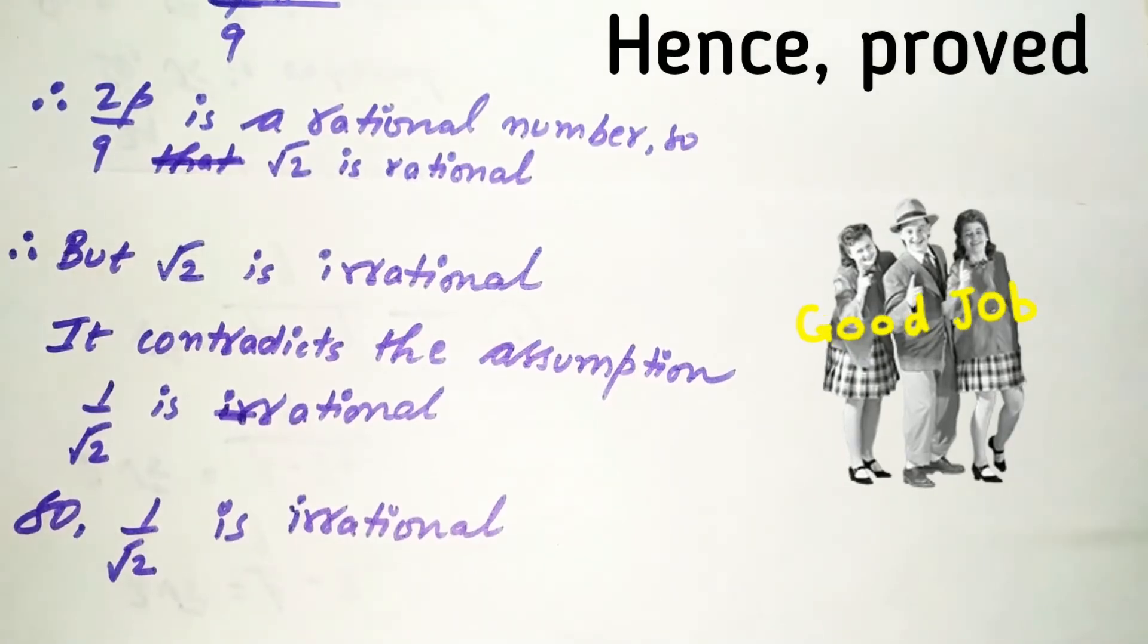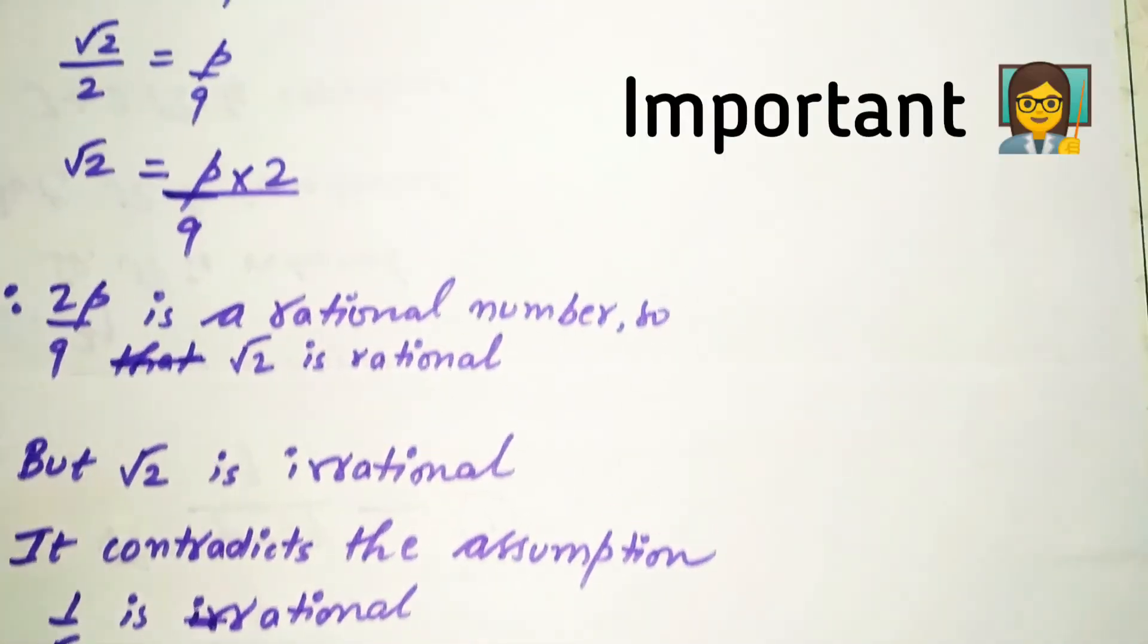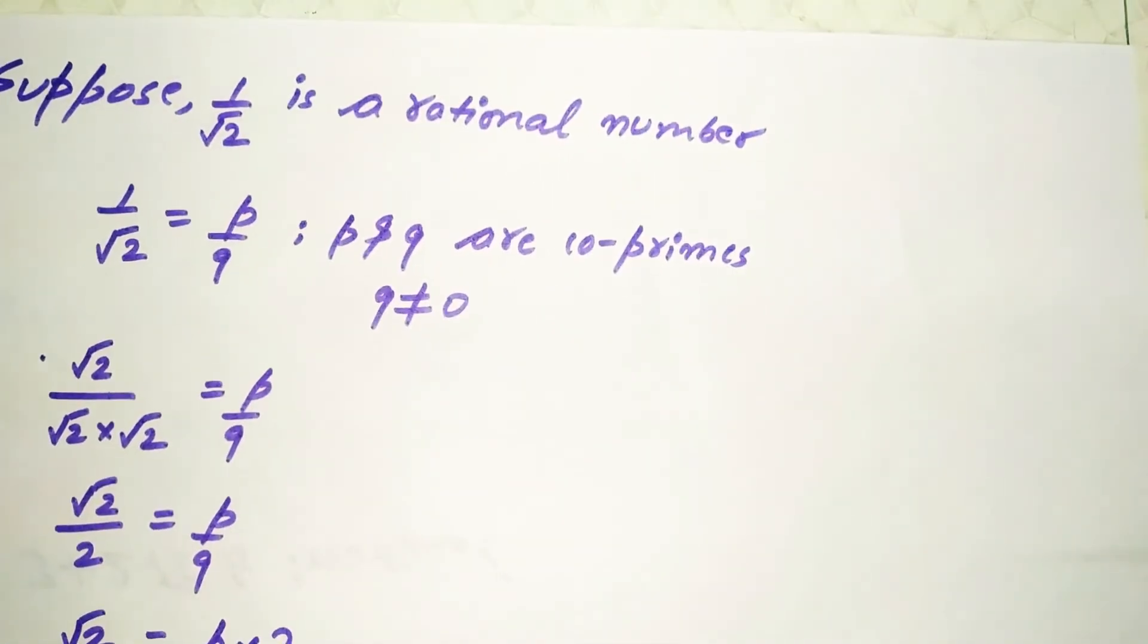Hence proved. Remember this question is pretty simple and all these questions can be solved by making two assumptions: first that the number is rational, and P and Q are co-primes.